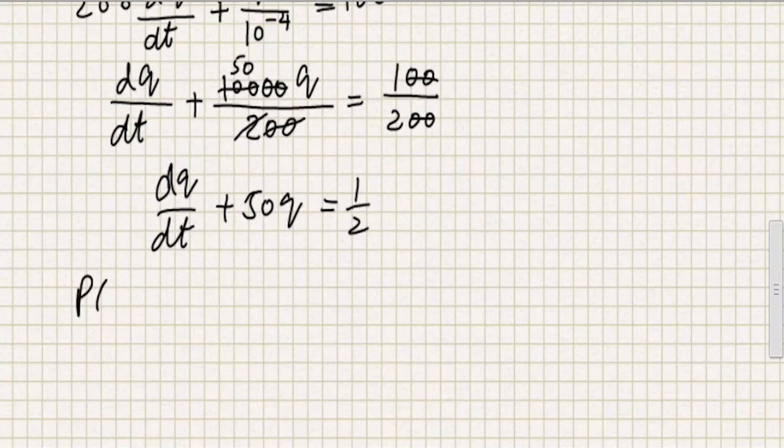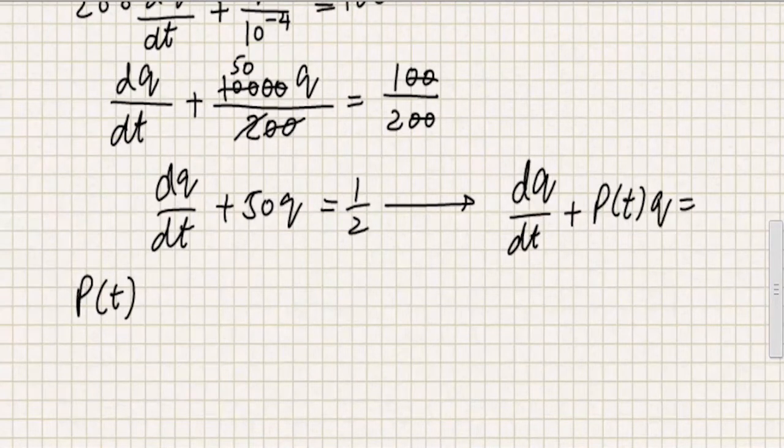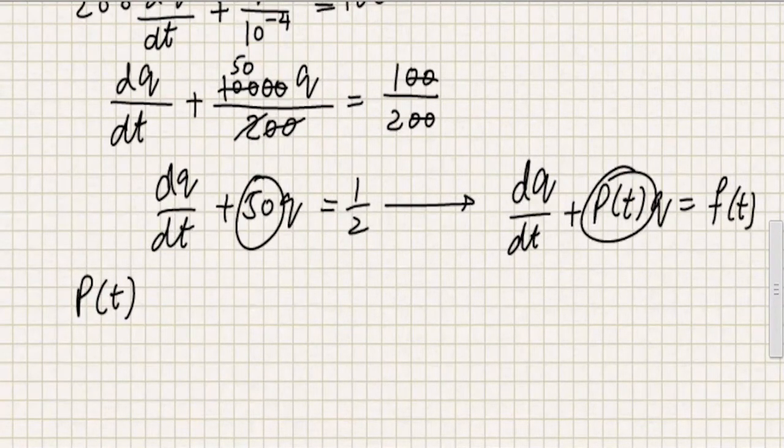So I have to solve this differential equation, in which P of T, because if you remember, we wrote the equations like this, dQ by dt plus P of T Q equal to F of T. This was the standard form, so comparing this equation with the standard form, we can immediately see that 50 will be P of T.